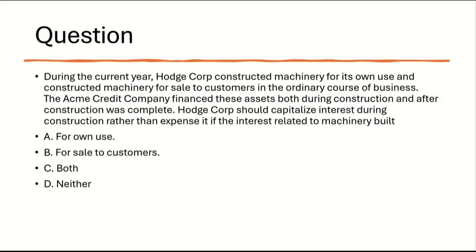Something for sale to customers in the ordinary course of business — that's inventory. Hodge Corp did two things: they constructed inventory, but also constructed machinery for its own use. So they built machinery for two different purposes. The Acme Credit Company financed both assets during construction and after construction was complete. Hodge Corp should capitalize interest during construction rather than expense it if the interest related to machinery built — A) for Hodge Corp's own use, B) for sale to customers, C) both, D) neither.